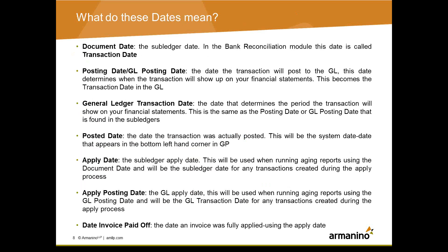GP has a variety of dates. The ones to mainly focus on are transaction date and GL posting date. Document date is the subledger date. GL posting date is the date the transaction will post to the GL. General Ledger transaction date determines the period the transaction will show on your financial statements. The posted date is the date the transaction was actually posted. The apply date is the subledger apply date, the apply posting date is the GL apply date, and the date invoice paid off is the date an invoice was fully applied.